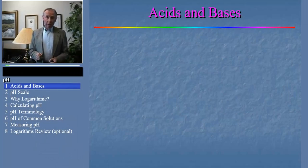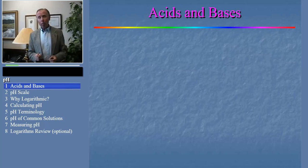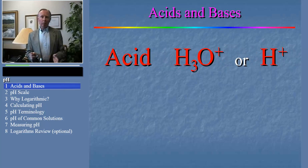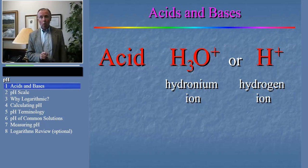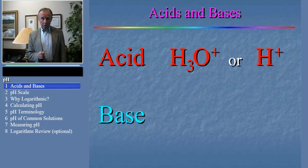We encounter acids and bases commonly in all walks of life. Today we're going to talk about a handy way to express just how strong an acid or base solution really is. One important definition of an acid is any compound that increases the hydrogen ion, or better said, the hydronium ion concentration when dissolved in water. And a base is any compound that increases the hydroxide ion concentration.